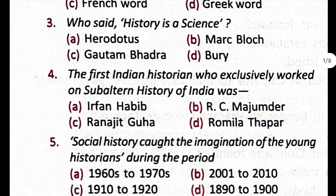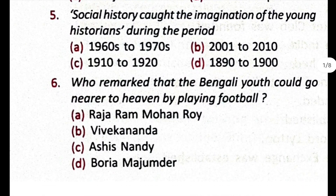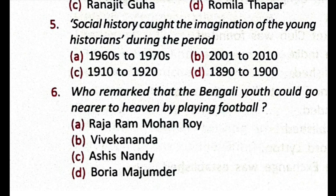Question number 3: who said history is a science? The correct option is D, Bury (B-U-R-Y). Question number 4: the first Indian historian who exclusively worked on subaltern history of India was — correct option C, Ranjit Guha. Question number 5: social history caught the imagination of the young historian during the period. Option A is correct: 1960s to 1970s.